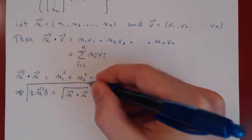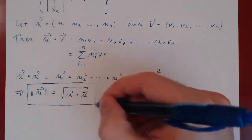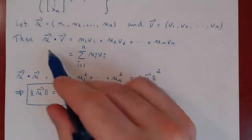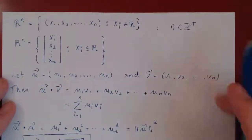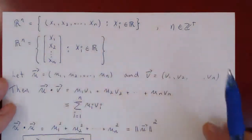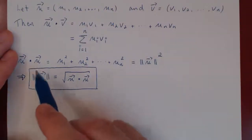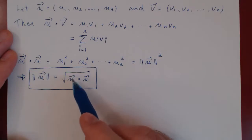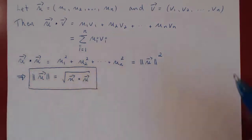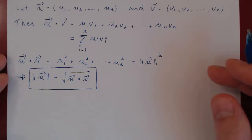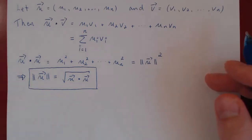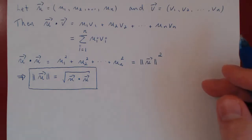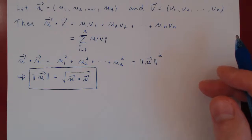We have the concept of length, but we're missing another fundamental concept: angles. Do we still have angles in R⁴, R⁵, and beyond? The answer is yes, but we'll have to extend the Cauchy-Schwarz inequality to make it work.